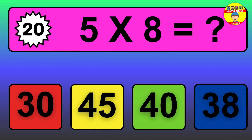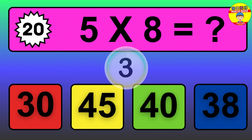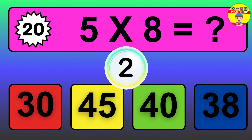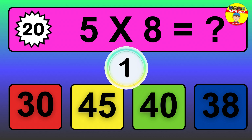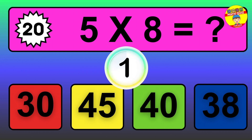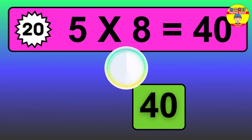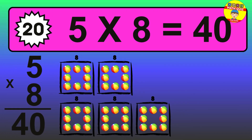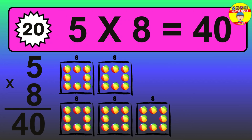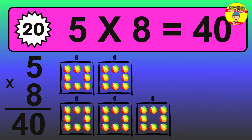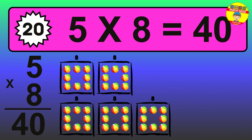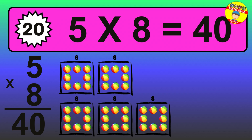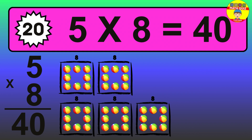Question 20. Five times eight equals what? The answer is five times eight is 40. To calculate, we have five groups with eight balls each one. So, how many balls do we have? 40 balls.